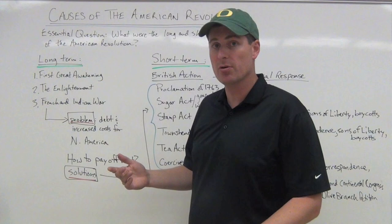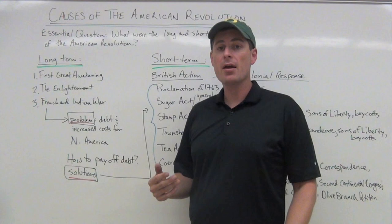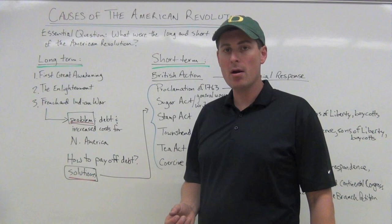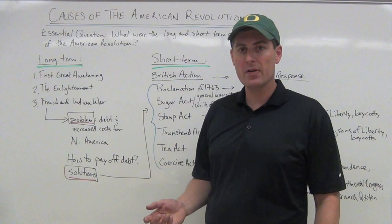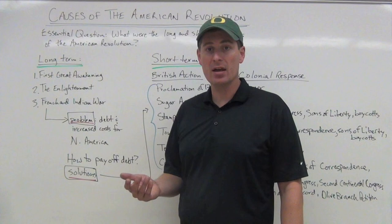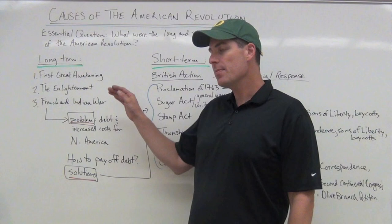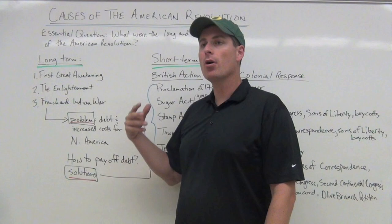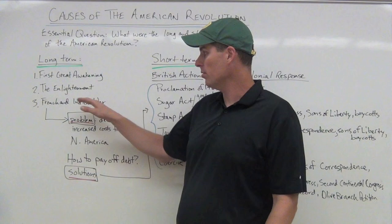Let's look at the long-term causes first. The First Great Awakening in the early 1700s is going to be a religious revival. It is the rise of a bunch of new, predominantly American denominations, a breaking away from the Church of England, also called the Anglican Church. With the Anglican Church headed by the King of England and directly tied to the British government, as people break away to other denominations, it's like fracturing the bond a little bit.